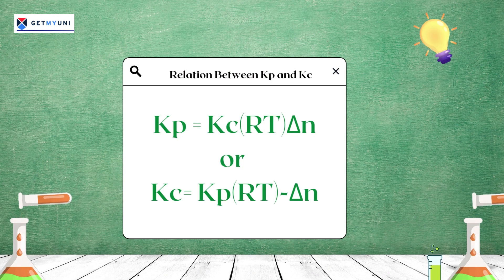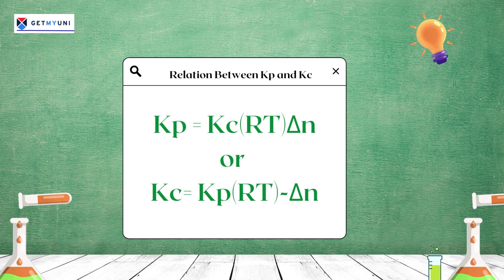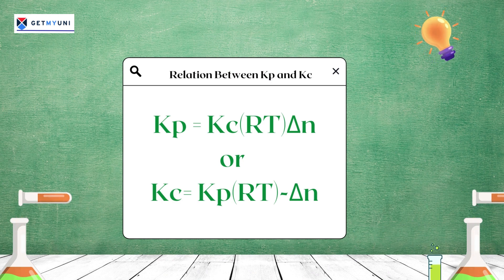R is the universal gas constant, T is the temperature in degrees Kelvin, and Δn is the change in the number of moles of gas molecules — i.e., the difference between the total moles of gas products and the total moles of gas reactants.